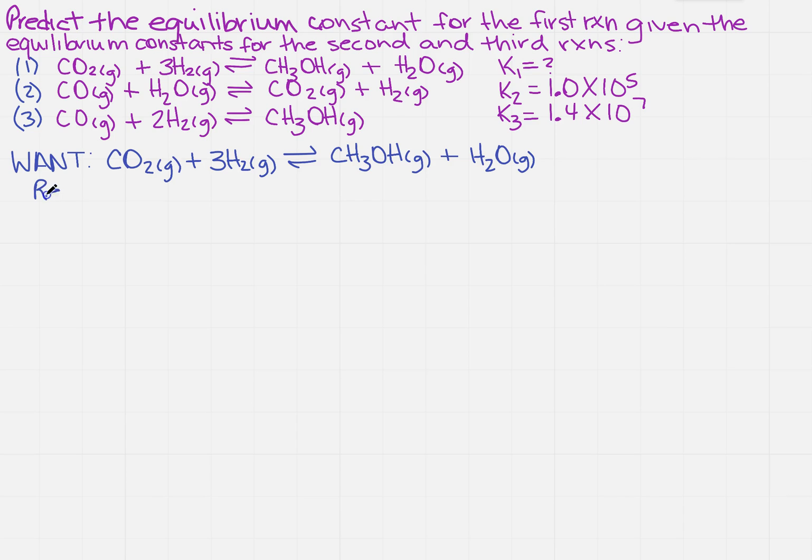So I'm going to reverse number 2, and I'm going to write that down. I've reversed the equation. So what do I have to do to the equilibrium constant? If you recall, K reverse is equal to 1 over K forward. So I have the forward here, so this is going to become 1 over 1.0 times 10 to the 5th. We've used equation 2, and we've found the equilibrium constant. I'm going to make a little line through that because I've already used it.